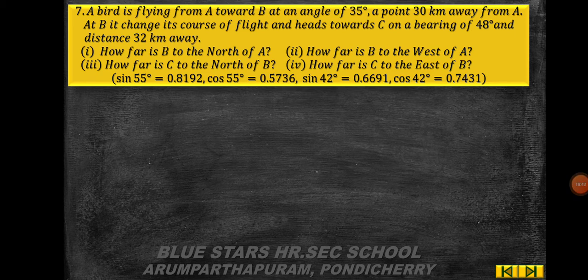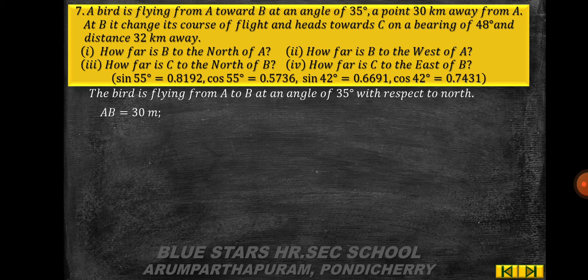Problem 7: a bird flies from A toward B at a bearing of 35°, 30 km away. At B it changes course toward C on a bearing of 48°, 32 km away. Find: (i) how far B is north of A, (ii) how far B is west of A, (iii) how far C is north of B, (iv) how far C is east of B. (sin 55° = 0.8192, cos 55° = 0.5736, sin 42° = 0.6691, cos 42° = 0.7431.)